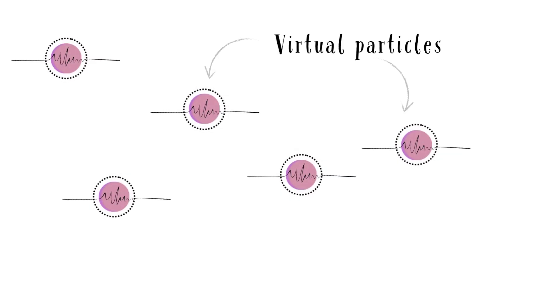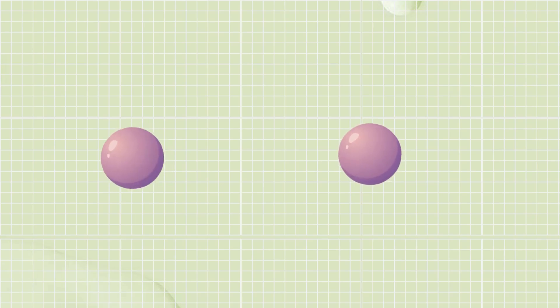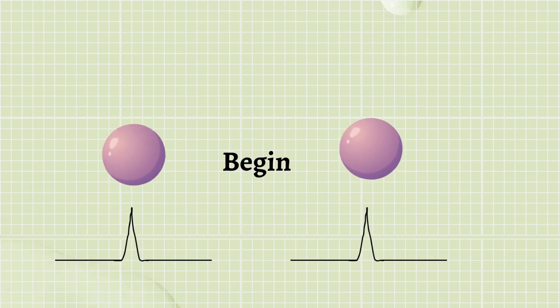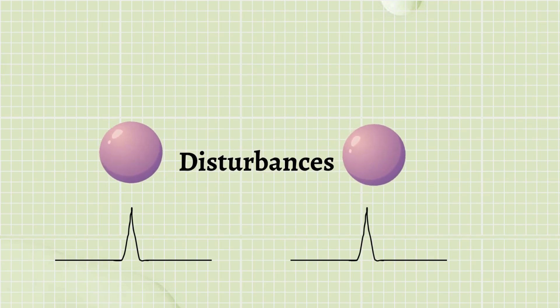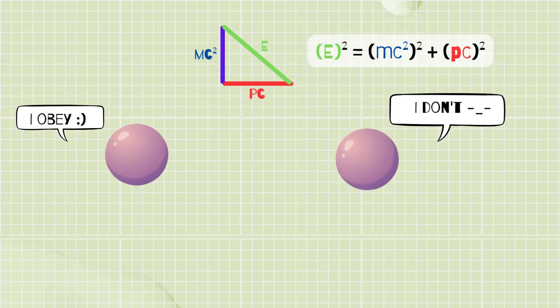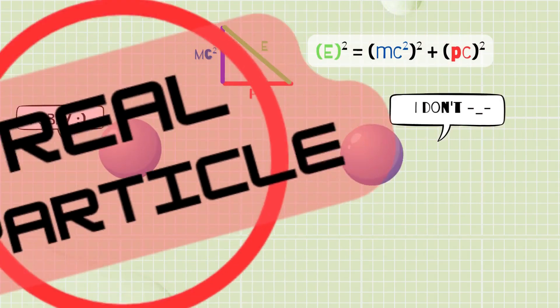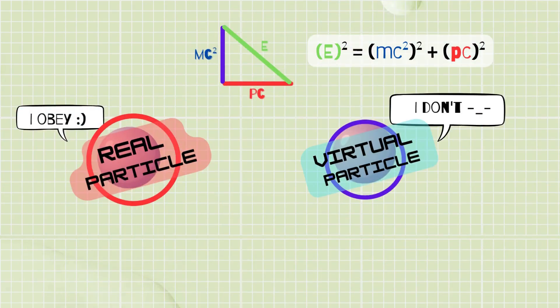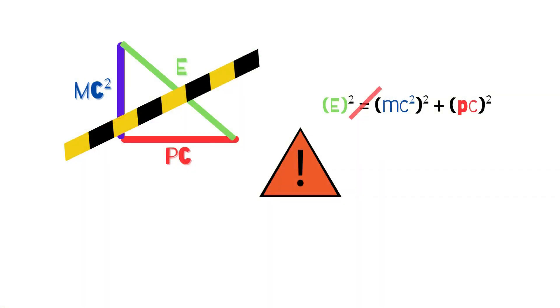The job of virtual particles is to mediate interactions in various phenomena. Both real and virtual particles begin as disturbances, but only real particles obey the energy-momentum triangle and get to be on-shell. Virtual particles do not — they are off-shell. But how are they even possible?